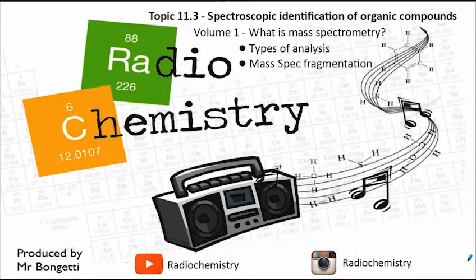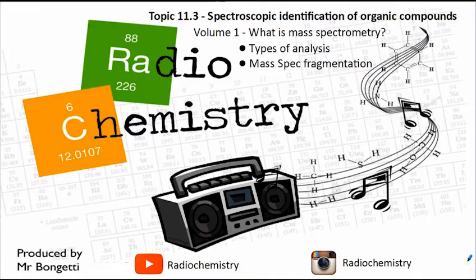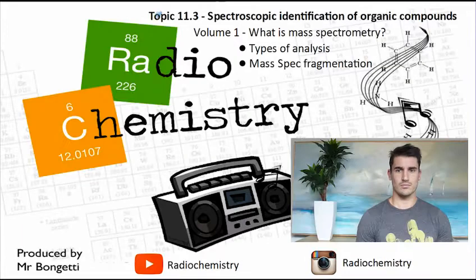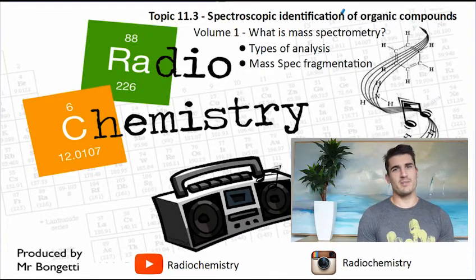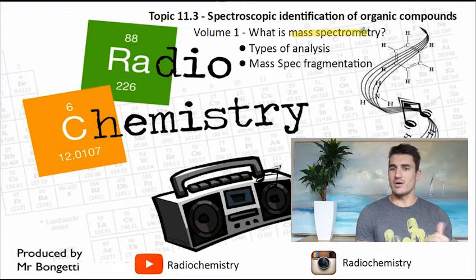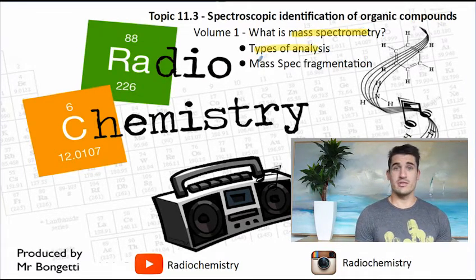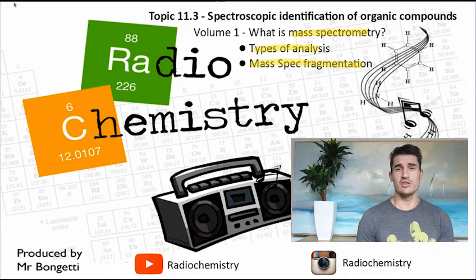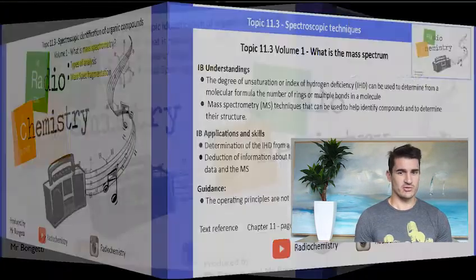How are you doing guys? Welcome to another video. This is topic 11 which looks at identification using some techniques for organic compounds. In this volume we talk about the mass spectrometer. Volume one: what is mass spectrometry? We look at the types of analysis we can do with mass spec and we look at the fragmentation and how we produce the spectrum.